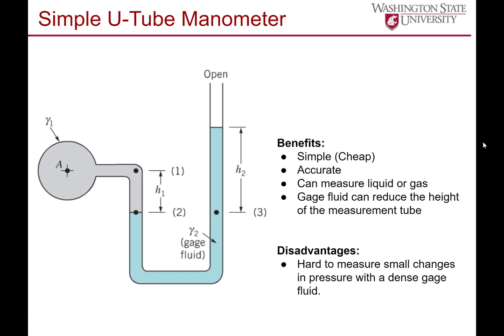Next is a U-tube manometer. The solution here is: what if we want to measure gas pressure? If we're measuring gas pressure and that gray substance in the pipeline is air or some other gas, this gauge fluid, if it's more dense or in liquid form, can form a barrier to keep that gas inside. The gauge fluid is commonly mercury because of its high specific weight, allowing for shorter columns.